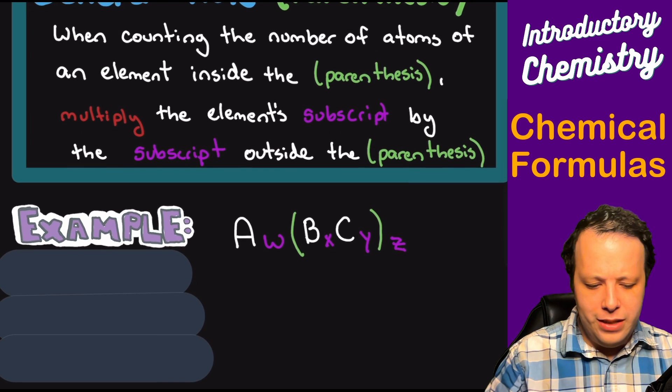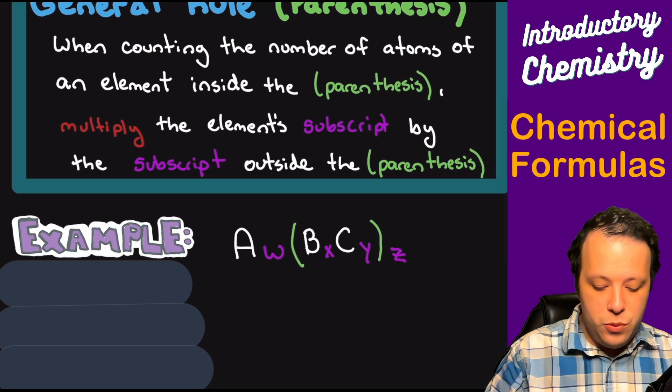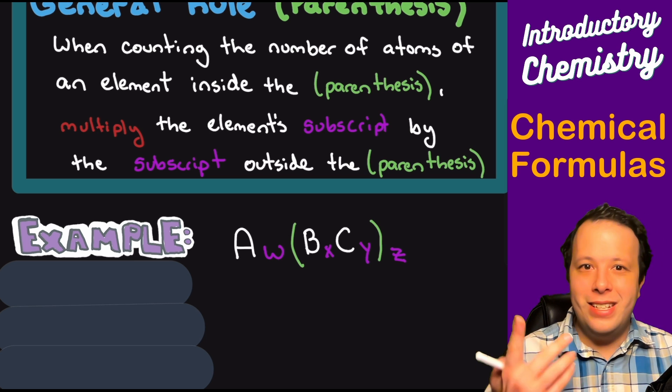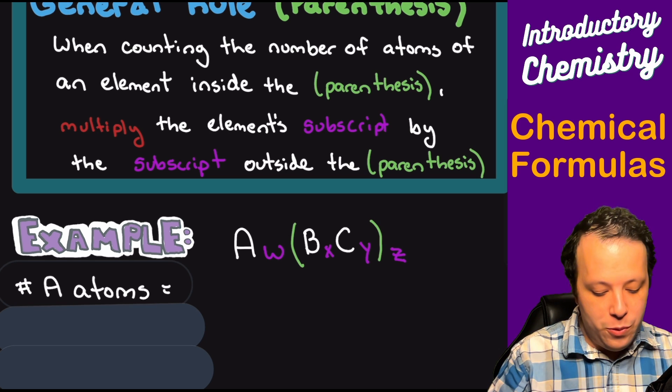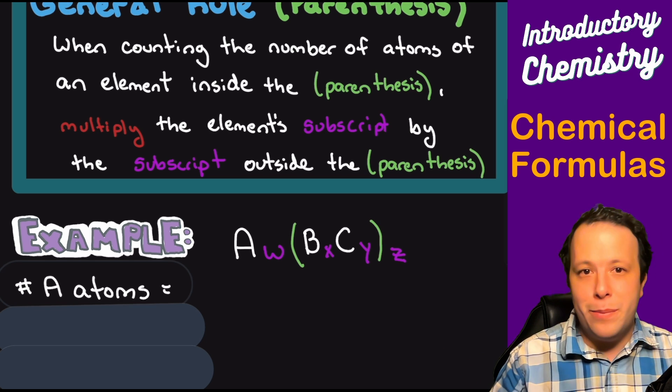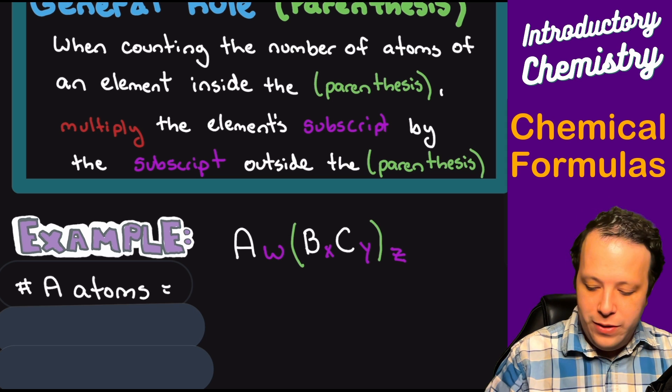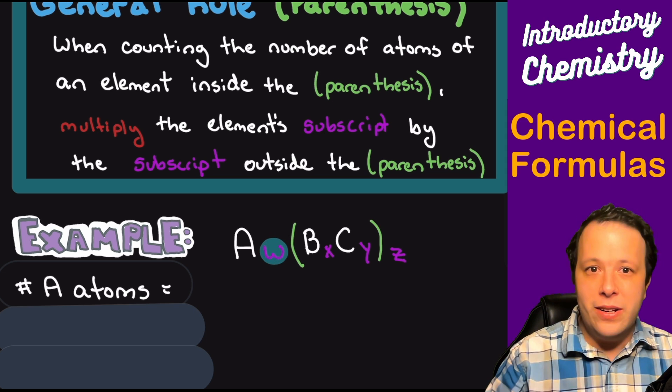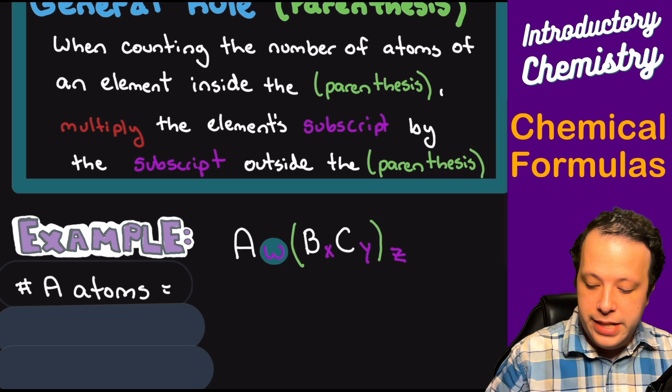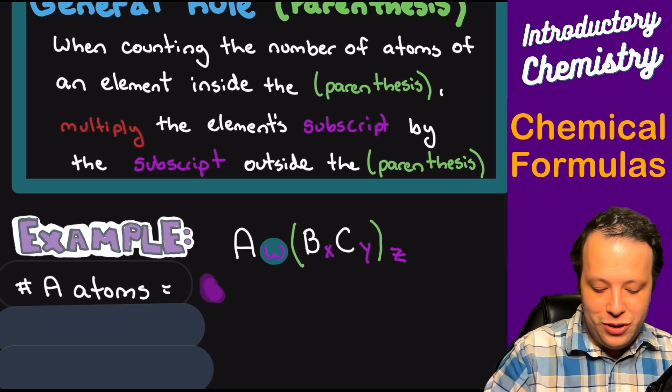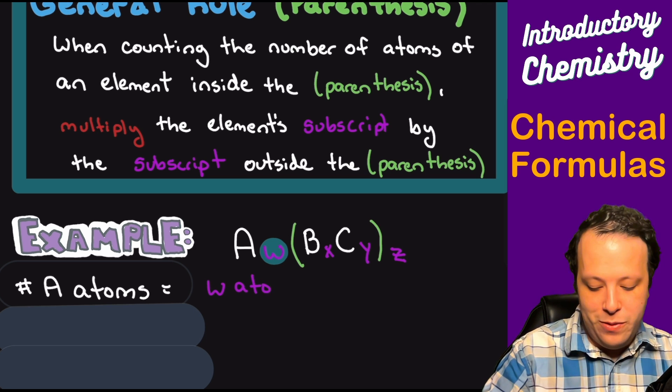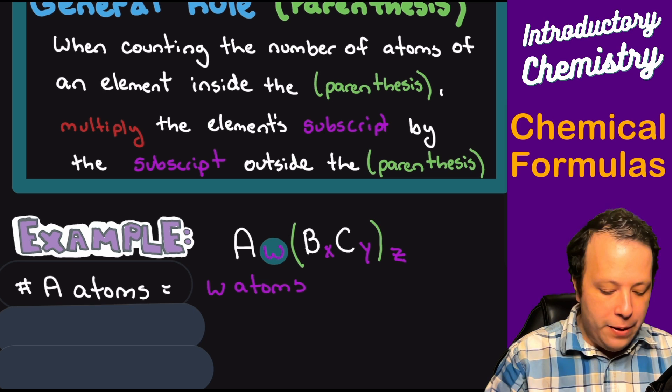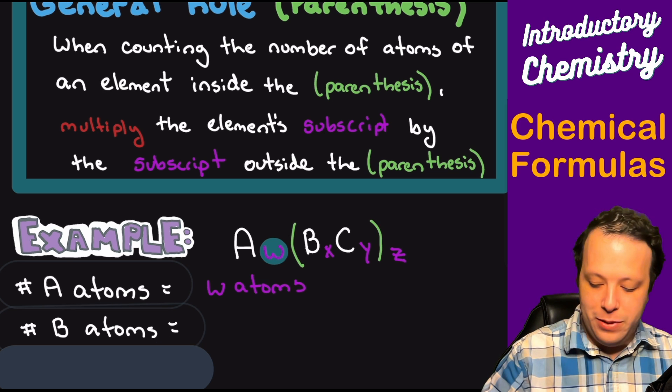So what do I mean by that? Let's just do a very hypothetical example like the one that is here. So what are we going to do? Let's count these numbers and letters for A, B, and C, these fake elements. How would it work? So the first thing I want to do is let's just count the number of A elements, and what you can see is that we got a W here. It's not in parentheses, so what that tells you is that A is equal to W amount of atoms, right? So W atoms.